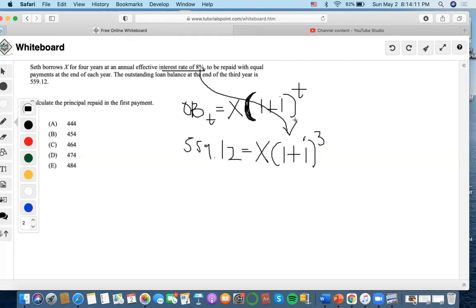We do $559.12 divided by 1.08 to the three to find the year one principal accumulated from one to three, which is $443.84. This happens to be choice A.